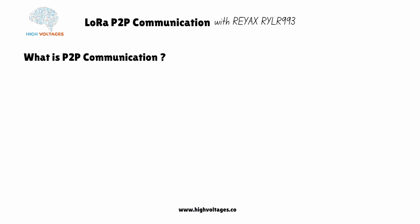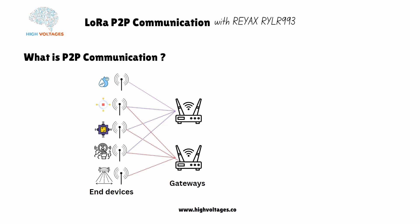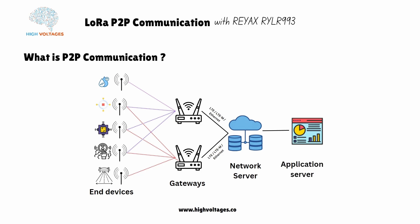Before understanding LoRa communication, let's look at the LoRaWAN architecture. LoRaWAN consists of four key components. First, end devices — typically sensors or edge devices that collect valuable data. Second, gateways — which act as intermediaries connecting data from multiple end nodes, serving as a bridge to the network server. Third, the network server — which aggregates data from various gateways and prepares it for the application server. Fourth, the application server — where data is processed, analyzed, and displayed.